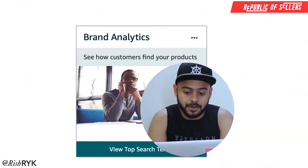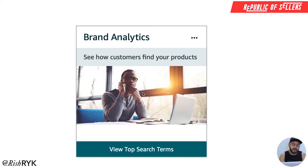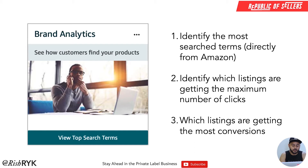Right now I'm on my computer screen, and this is the option that you will start seeing in your Seller Central dashboard as soon as you log in. Let me walk you through how you can leverage your Amazon FBA business using this tool. The first thing you can use this tool for is to identify the most searched terms for your search keyword — directly from Amazon, without depending on third-party tools like Jungle Scout, AMZ Scout, or Helium 10.